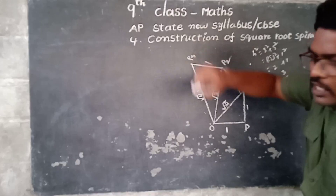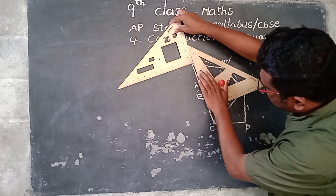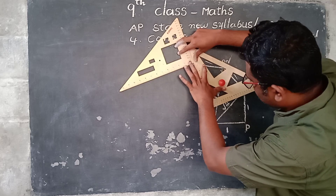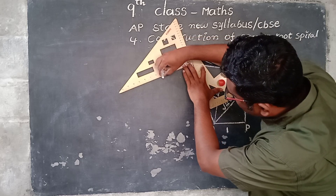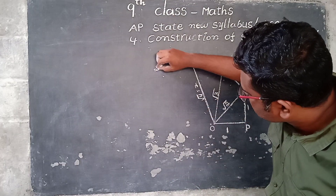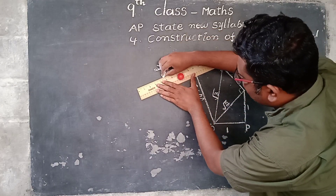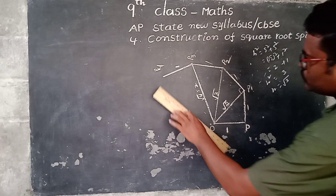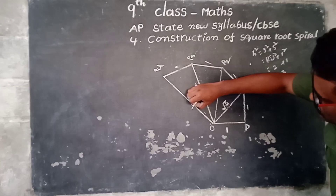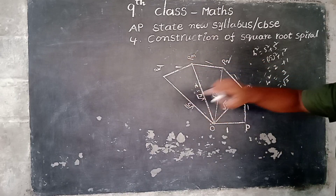At P3, construct a perpendicular to point P4. Joining P3 and P4 is of unit length. Now joining O and P4: this gives root 5, because 2 squared plus 1 squared, the square root is root 5. So O to P4 equals root 5.